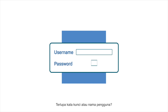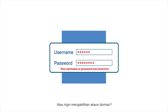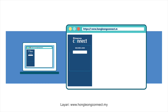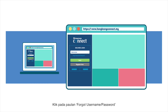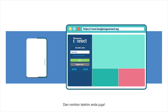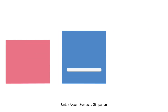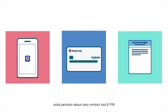Forgot your password or username? Or need to activate a dormant account? Just visit www.hongliangconnect.my and click on the forgot username or password link. Select the account and be sure to have your account details ready — and your mobile phone too! The 6-digit TAC will be sent to the registered mobile number. For current or savings account, you will need your account or card number and PIN.